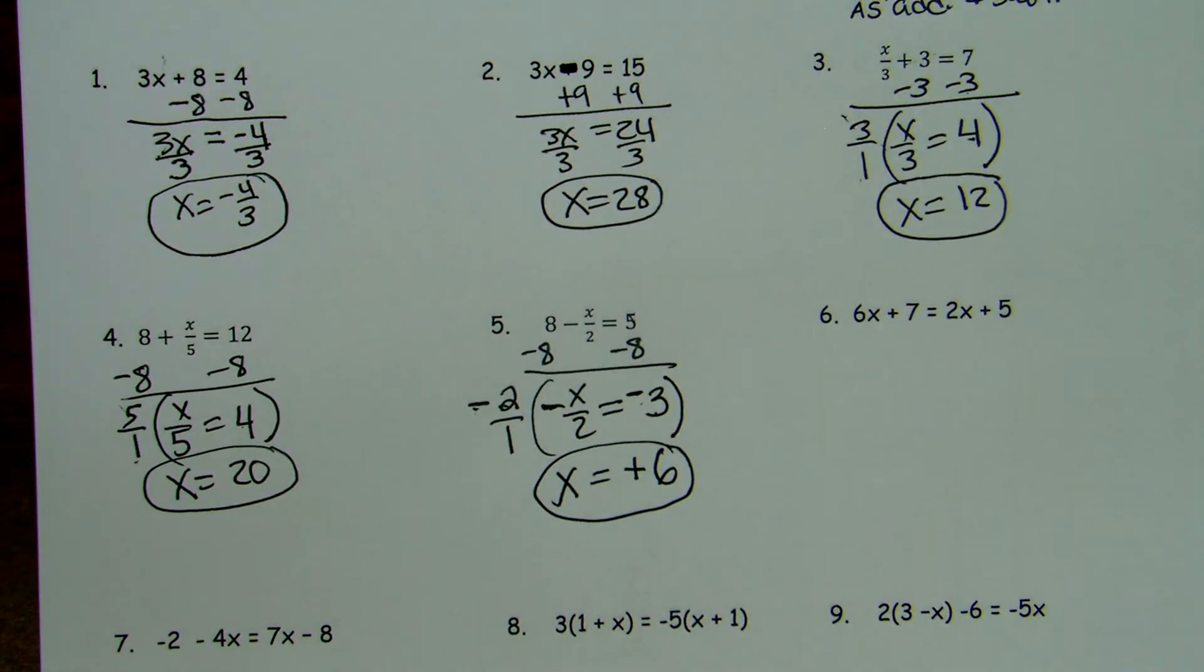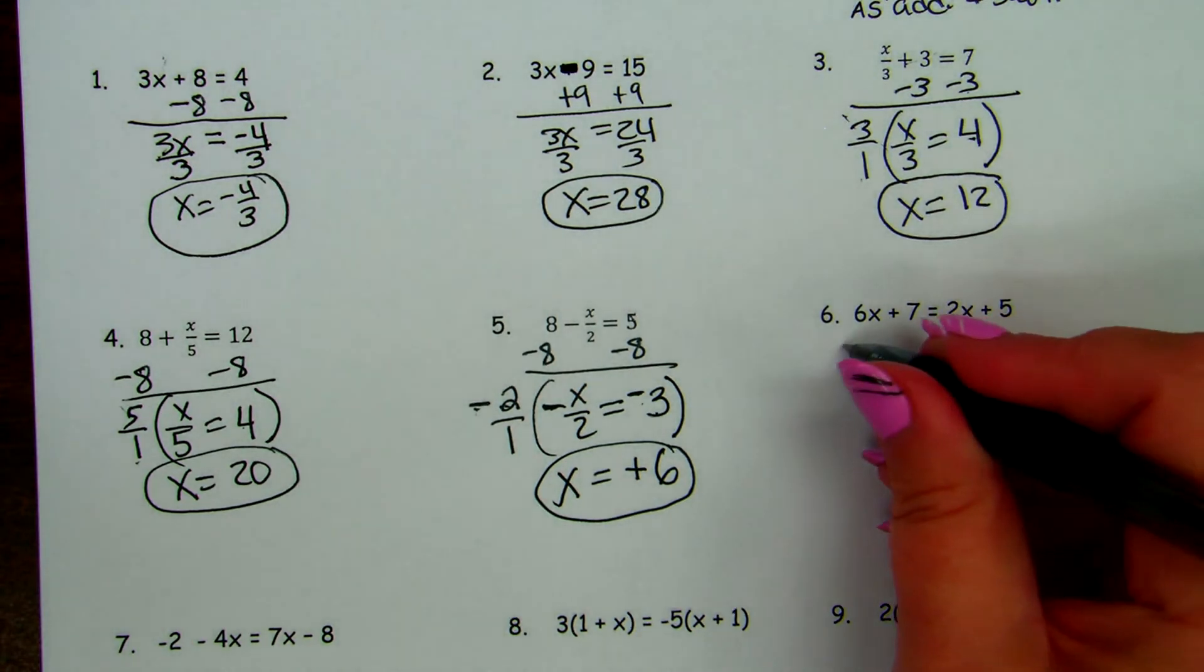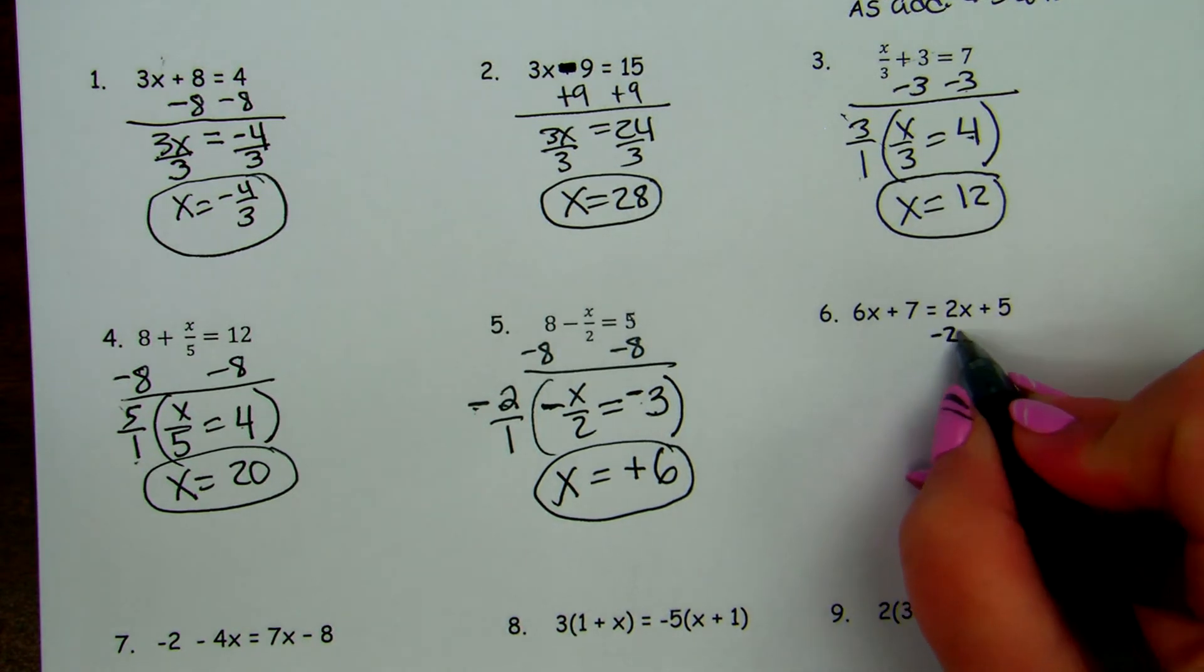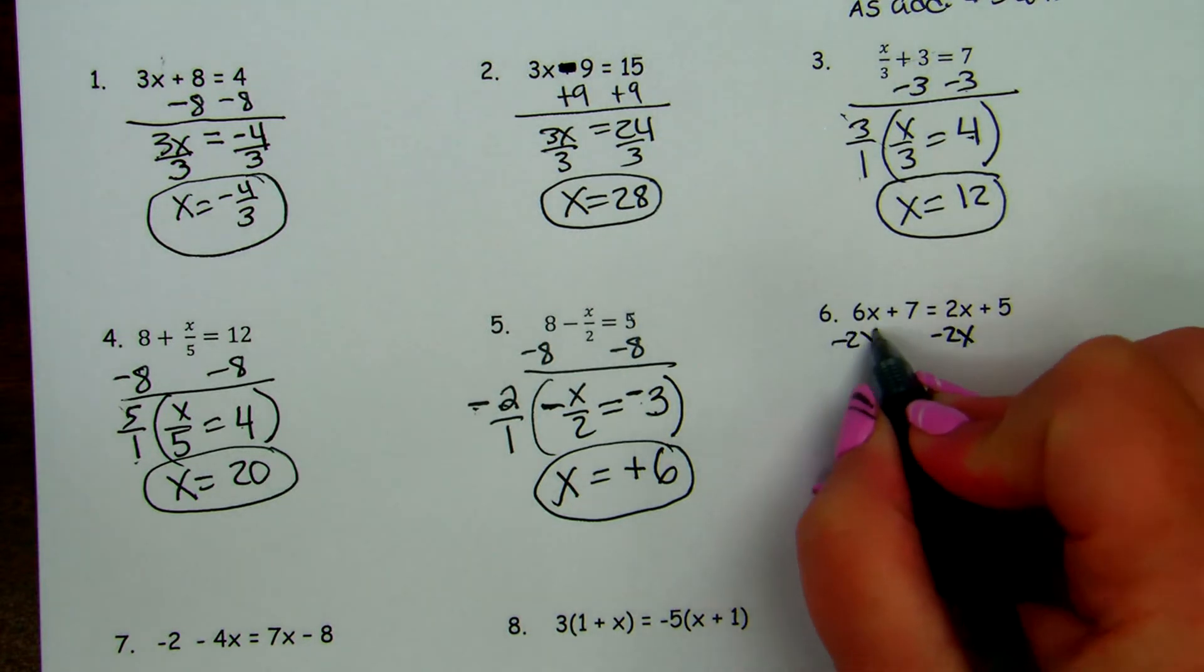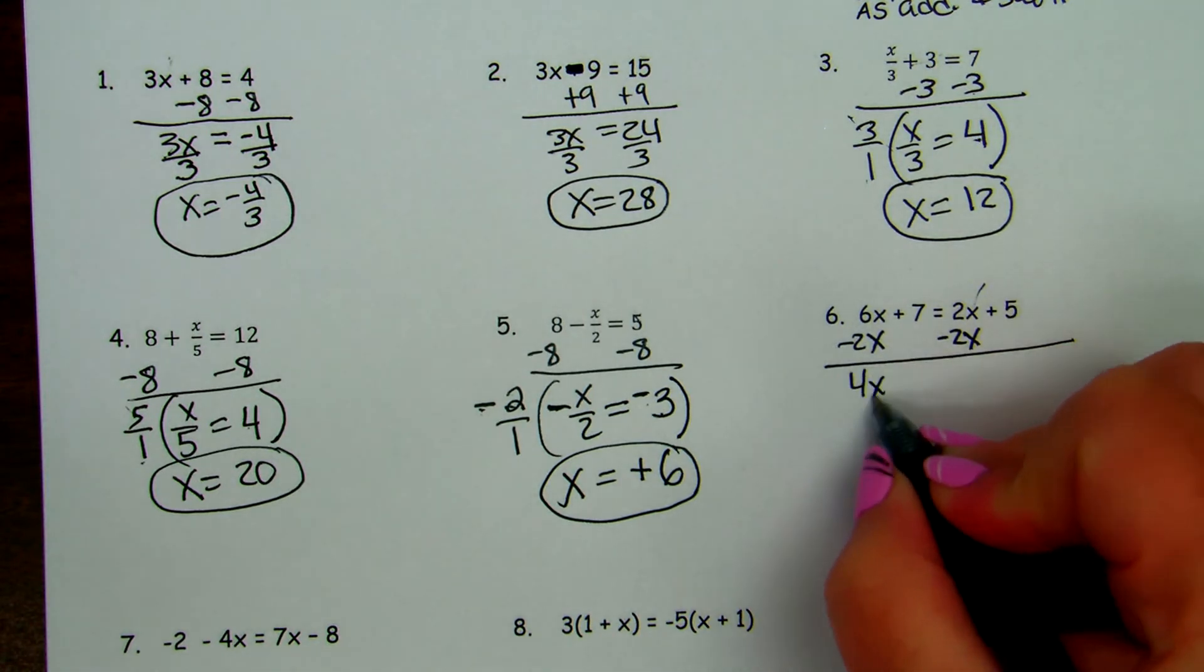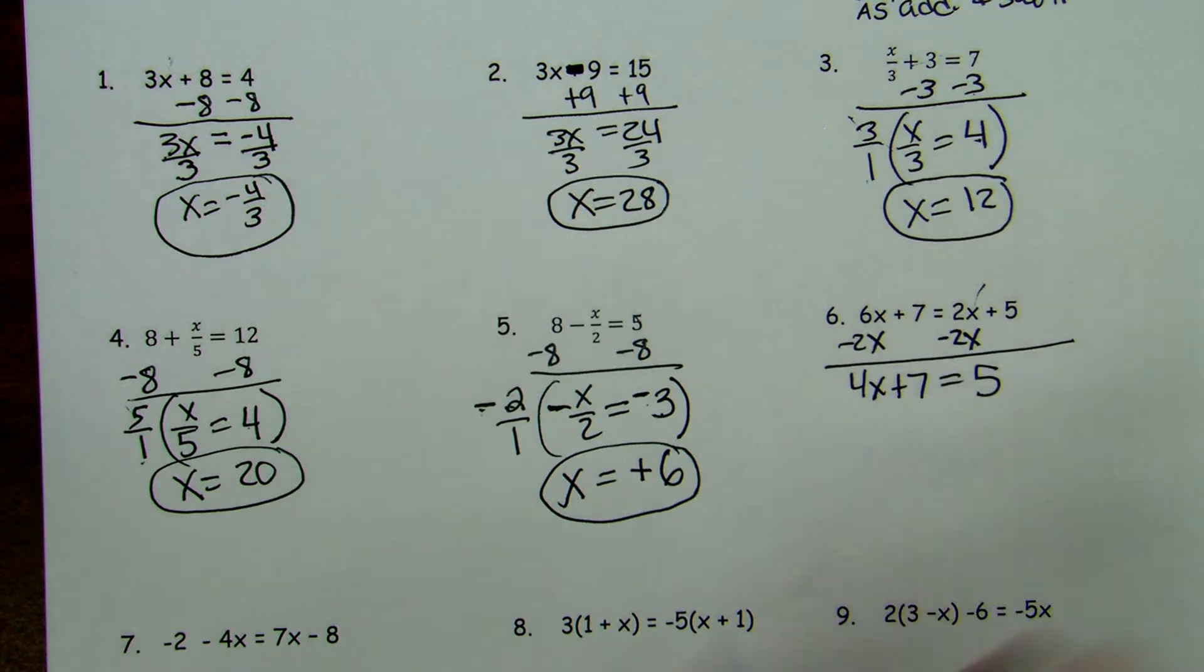Next, we have equation with variables on both sides. What I usually do with those is deal with the x's first and then deal with the numbers next. So you want to get the x's together on the same side. If you subtract 6x from both sides, you'll get a negative 4x. And I don't like to deal with negatives as much as I can, so I'm going to move the negative 2x. I'm going to subtract 2x from both sides. So these cancel, and 6x minus 2x is 4x.